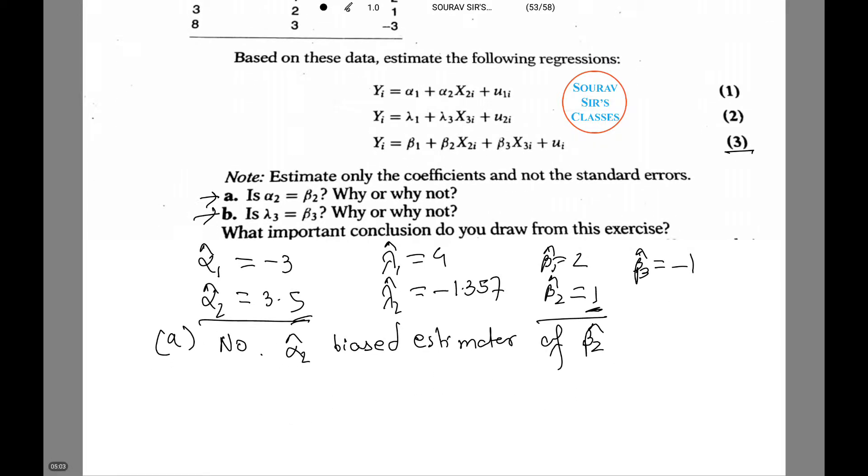Now number b. Is lambda 3 equal to beta 3? What do you think? No. That's because it's simple. You cannot see lambda 3 on the screen. That's because lambda 3 is a biased estimator of beta 3 for the same reason as earlier.